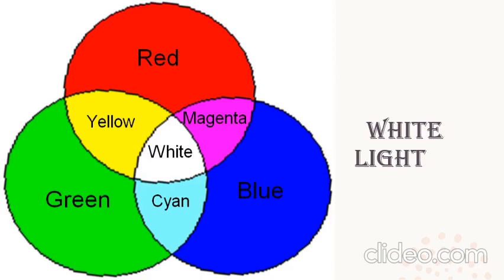So we all know what is the primary color, what is the secondary color, and what happens when all these colors are mixed together. Primary color is the one which cannot be obtained by adding any two colors. Secondary color is the one which can be obtained by mixing any two primary colors alone. And white light is the formation of all the colors.